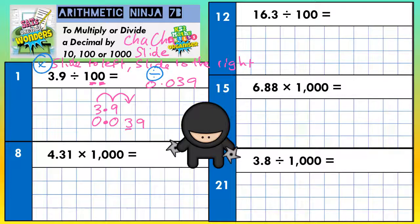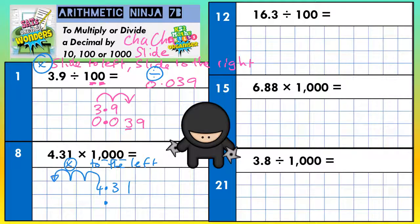Question 8. We'll start with 4.31. The decimal point isn't going to move, so you can put that in underneath. We're multiplying by 1,000, so it's times to the left — we need to move each digit three places to the left, because there are 1, 2, 3 zeros on 1,000. The 4 is going to go 3 places to the left into that column, and if it goes 4, 3, 1 in the question, it goes 4, 3, 1 in the answer. We do have an empty space next to the decimal point which we must fill in with a zero. Final answer: 4,310.